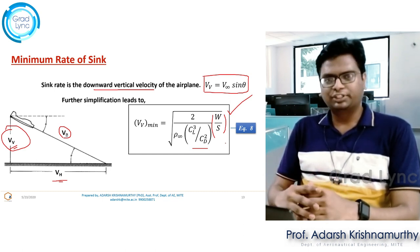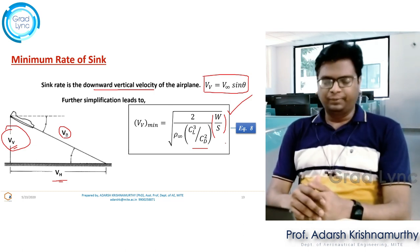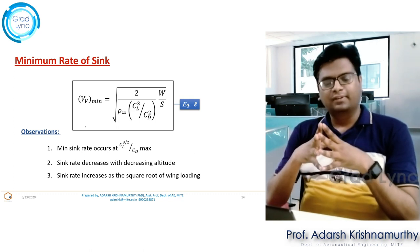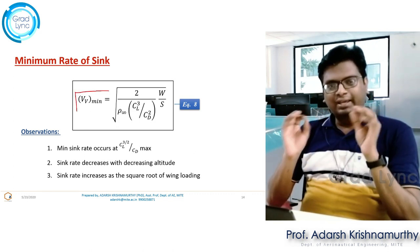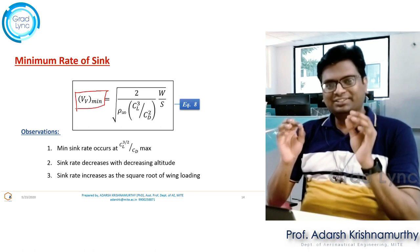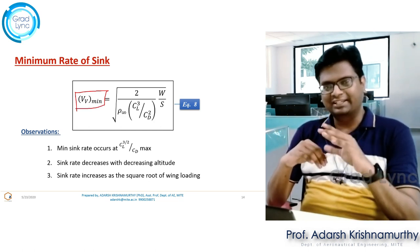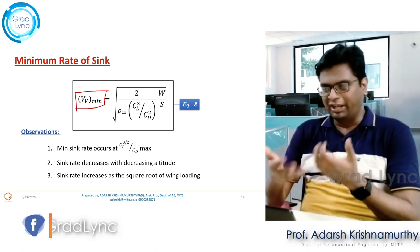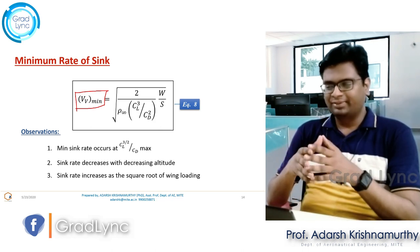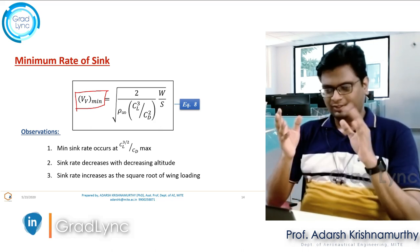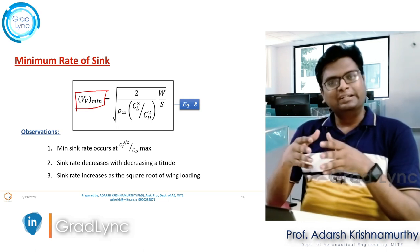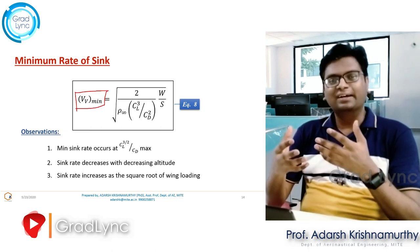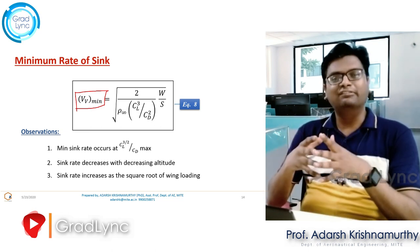Let's call this equation number 8. Now, if I want the sink rate to be minimum — meaning I want the aircraft to lose its altitude very slowly, with minimum altitude decrement every second — when will that occur? Observe this equation carefully: when CL^(3/2) / CD becomes maximum, the rate of sink will be minimum.